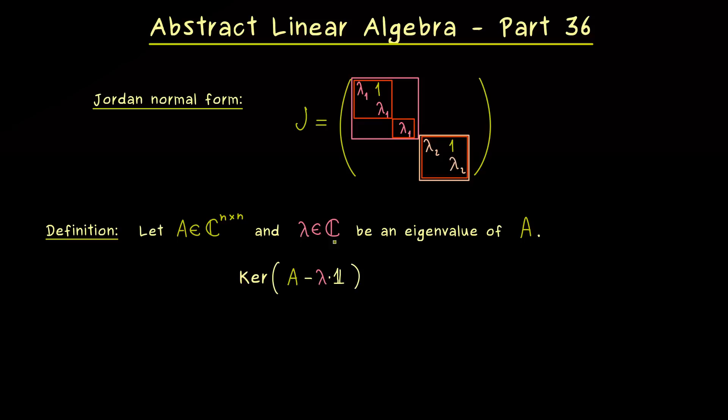And there it could happen that the dimension of this space could be less than the algebraic multiplicity of lambda. And indeed in this case we immediately know that A is not diagonalizable. And therefore the natural question would be can we increase this dimension when we consider powers.